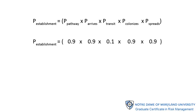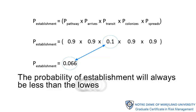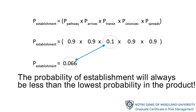Let a high probability equal 0.9 and a low probability equal 0.1. You could use any values you want here, but these will do for our purposes. The general equation now becomes very specific: it is 0.9 × 0.9 × 0.1 × 0.9 × 0.9 — that is four high probability values times a single low probability value. The overall probability of establishment is 0.066, which is lower than any one of the values in the equation above.